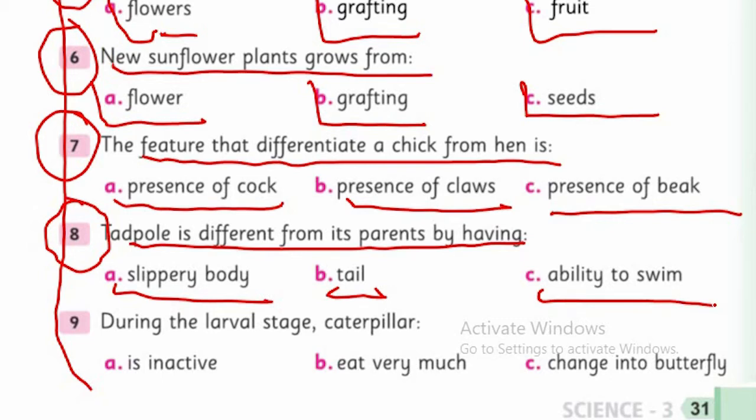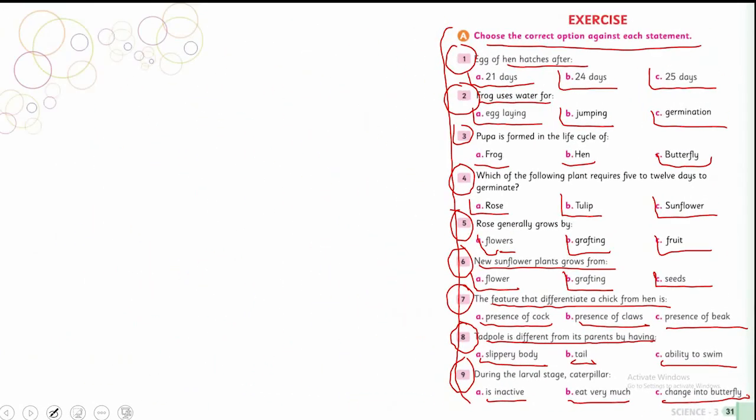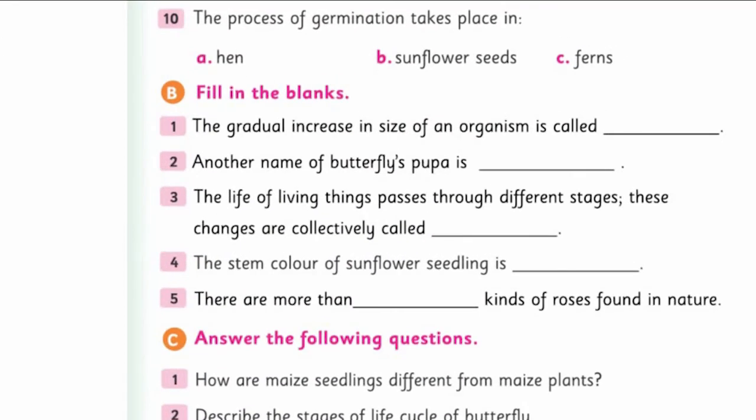Question nine: During the larval stage, caterpillar is inactive, eats very much, or changes into butterfly? If you review eggs, then larva, pupa, and adult again, you'll find this answer. Moving to the next page. Question ten: The process of germination takes place in hen, sunflower seed, or ferns? This is quite an easy question, and I'm sure you understand and can answer it.